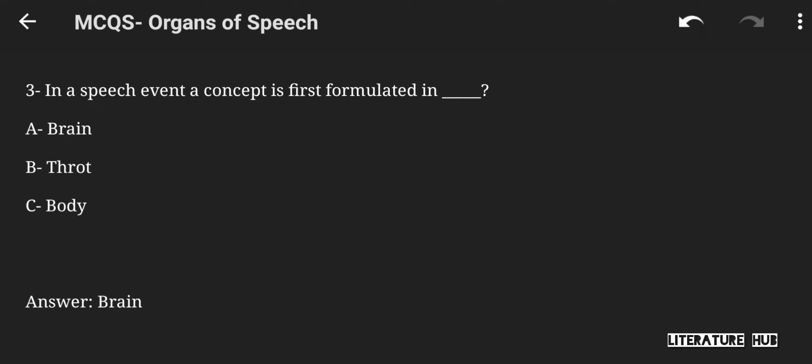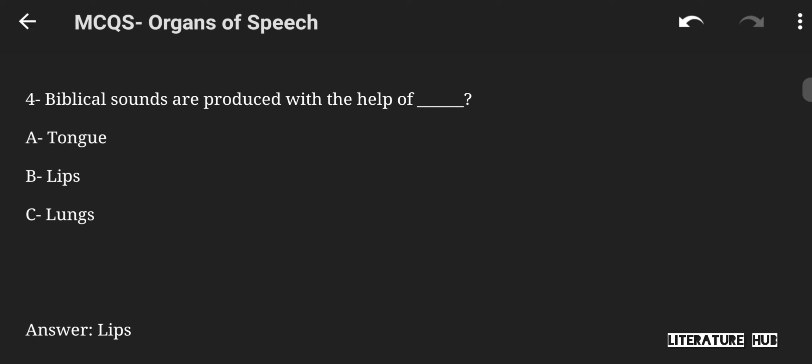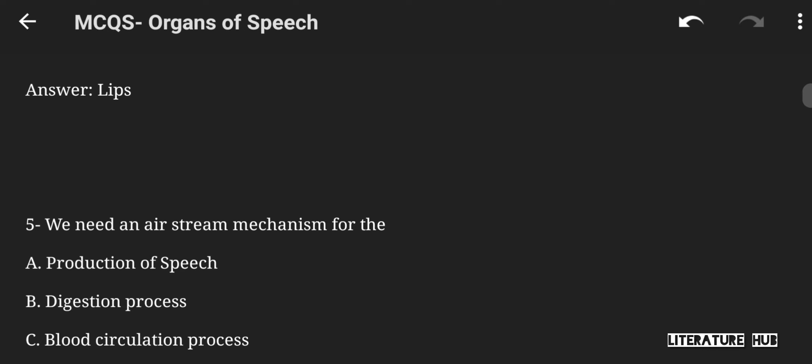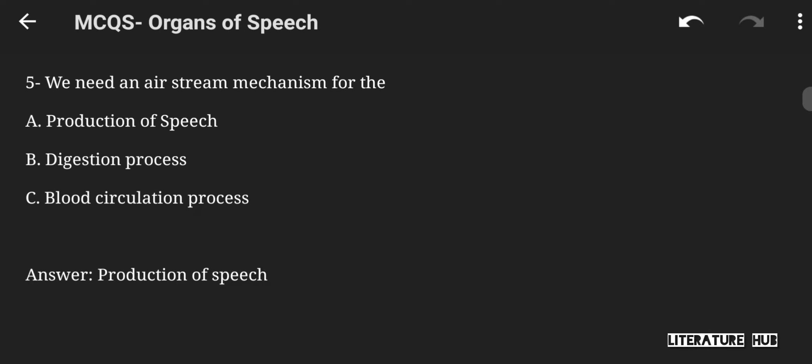In a speech event, a concept is first formulated in the brain, throat, or body. The right answer is brain. Bilabial sounds are produced with the help of tongue, lips, or lungs. The right answer is lips. We need an air stream mechanism for the production of speech, digestion process, or blood circulation process. The right answer is production of speech.